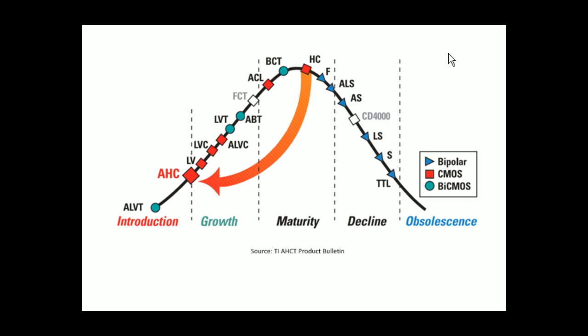Here's an interesting diagram I pulled from a TI bulletin about one of their families. It does show the rise and decline — the bell curve — of the old parts, the TTLs, the Schottkys, and some things in the middle like the fast and the HCs. As we come around the curve and get into the new stuff, you do see the red is CMOS, kind of mostly driving the way into the low voltages. Low power is what drives a lot of these small devices these days. There is also some BiCMOS, which means it's a mix of bipolar technology and CMOS technology.